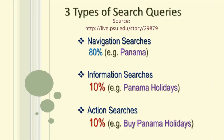The balance 20% of the searches is shared equally between informational and action types. To take the example of Panama, the informational search term will be 'Panama holidays', while the action type will be 'Buy Panama holidays.'